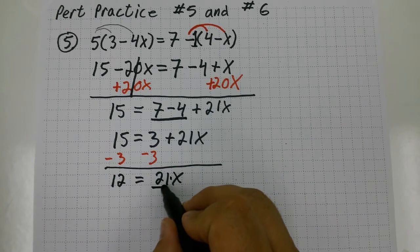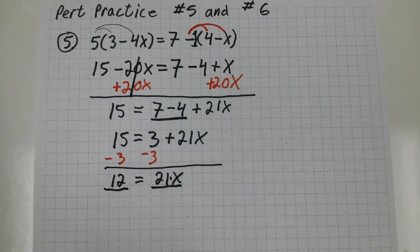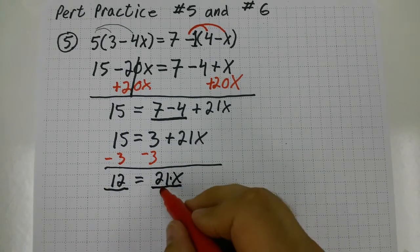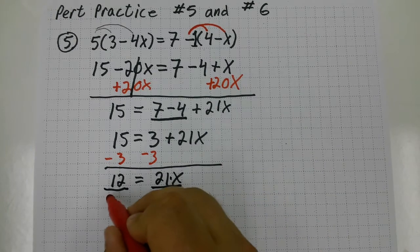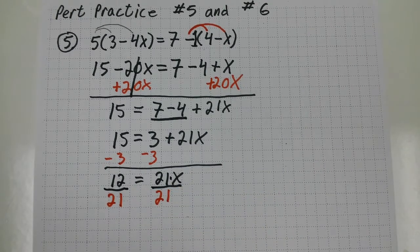Opposite of multiplying by 21 is divide both sides by 21. This gives me a fraction that I need to simplify. 12 over 21.